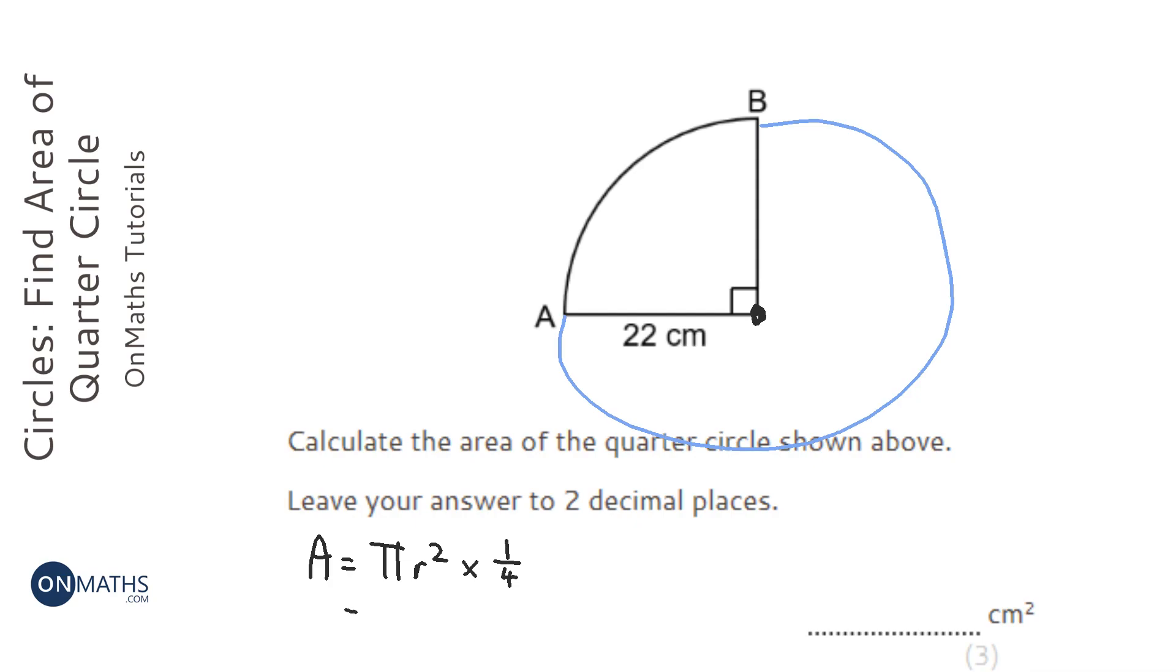So it's going to be pi times r, which is 22, squared times a quarter. So I'm going to do that on my calculator: pi times 22 squared, and then you can press equals and then just divide it by four. That's the same as times it by a quarter.